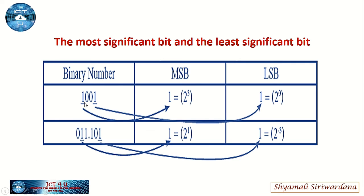The value at the left extreme of the decimal point which is not zero is the most significant bit. Now here is the binary number 1001. The first positional value — 1 means two to the power of zero, and this 1 is two to the power of three, which is the MSD. For the decimal number 011.101, you can take the decimal value two to the power of three and two to the power of one.